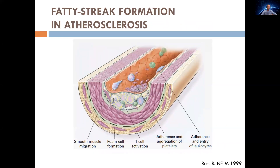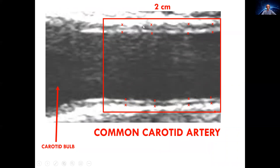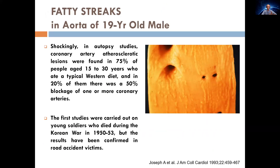These excess LDL cholesterol particles activate an immune response with transformation of macrophages into foam cells, which are responsible for the thickening of the intima media — the subendothelial space. As you can see here with echo Doppler, we can measure this thickening. This is a normal common carotid artery, and you can measure the intima media thickness.